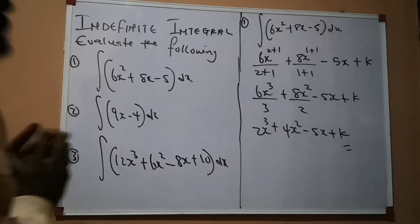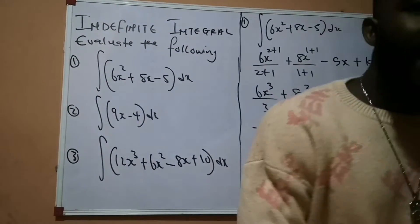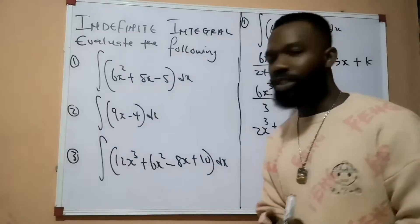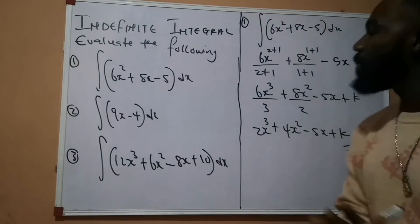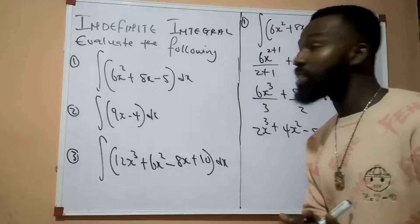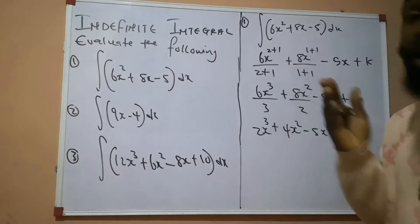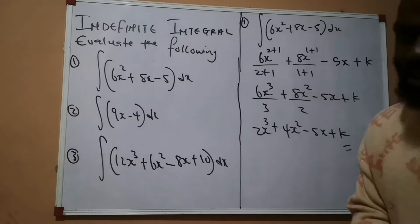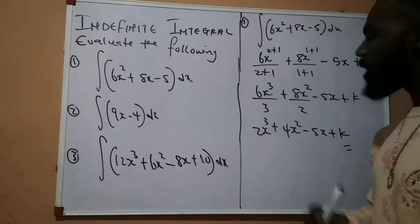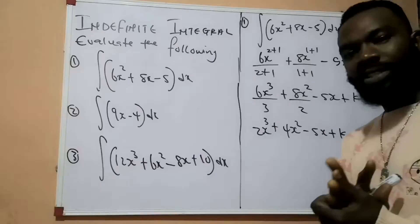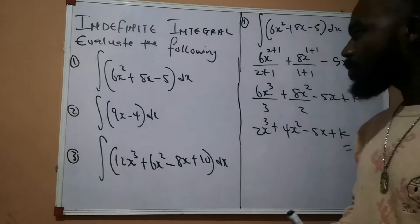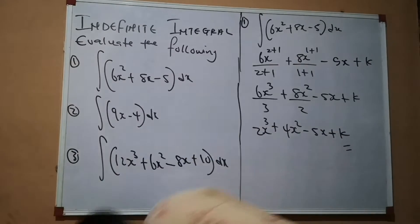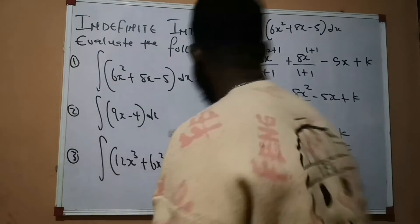It is as simple as this — just check for the power and add 1 to it. When there is no power and no x, it means it is a constant. And when you integrate a constant, you add x to it. That is all. Okay, that is question number 1. Now let's go to question number 2.